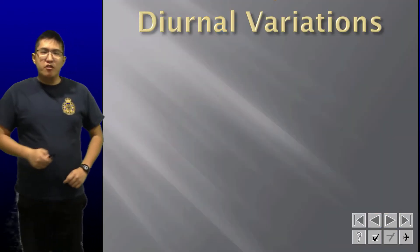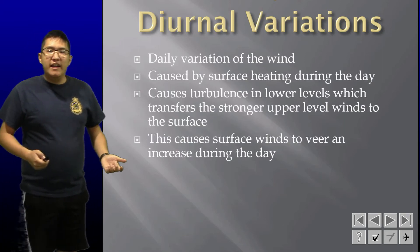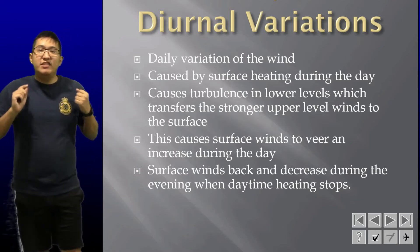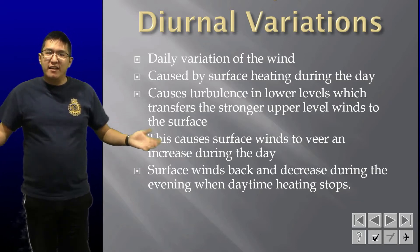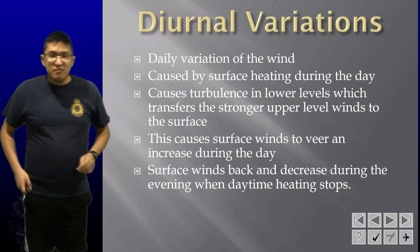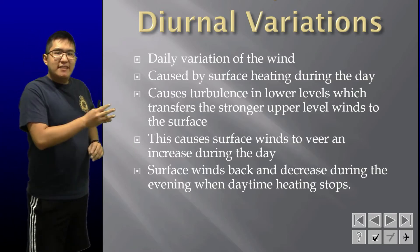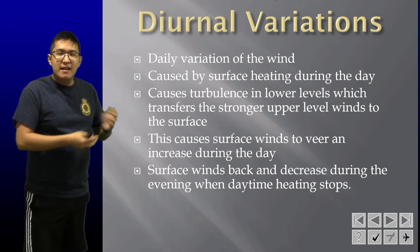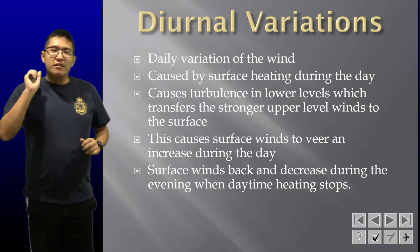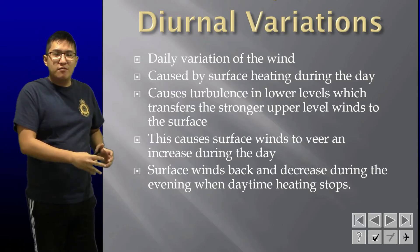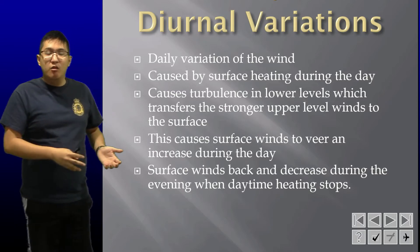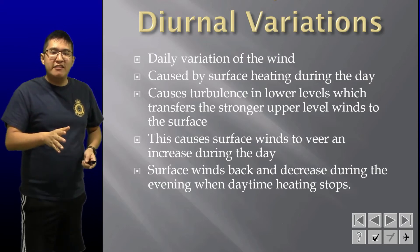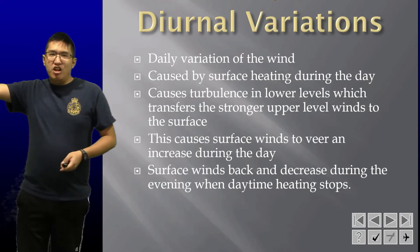Next up we have diurnal variations, which are the daily variation of the wind. Wind doesn't stay the same throughout the day — it changes ever so slightly. This is caused by surface heating during the day: the sun comes out and starts to warm things up, causing turbulence at the lower levels, which then transfers to stronger upper level winds at the surface. In general, what you really need to know is that the winds tend to veer and increase throughout the day.